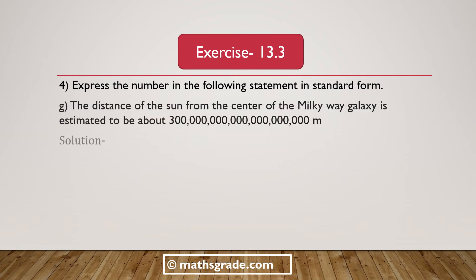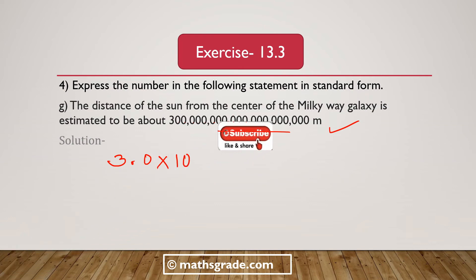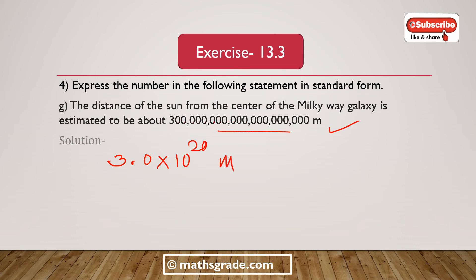Now part G. The distance of the Sun from the center of the Milky Way galaxy is estimated to be about a certain number of meters. If we place the decimal point after the digit 3, it will be 3.0 multiplied with 10 to the power 20 meters. So the distance of the Sun from the center of the Milky Way galaxy is 3.0 × 10²⁰ meters. This is in standard form.